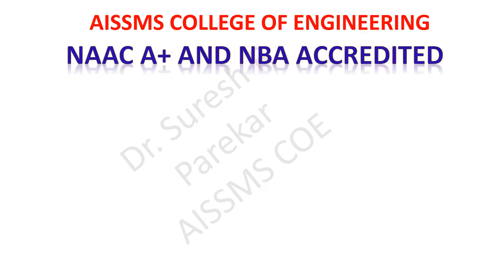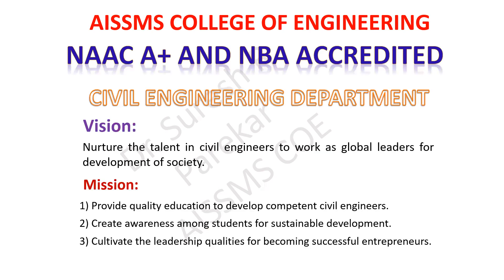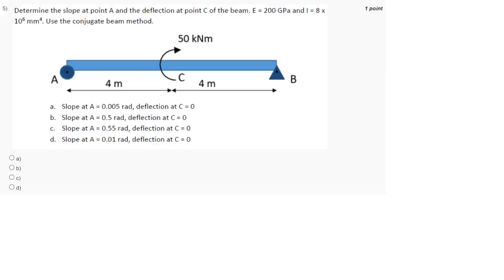Good afternoon. Now we will see problem number 5 from assignment number 5. Determine the slope at point A and deflection at point C of the beam. E is 200 GPa and I is equal to 8 × 10⁻⁶.